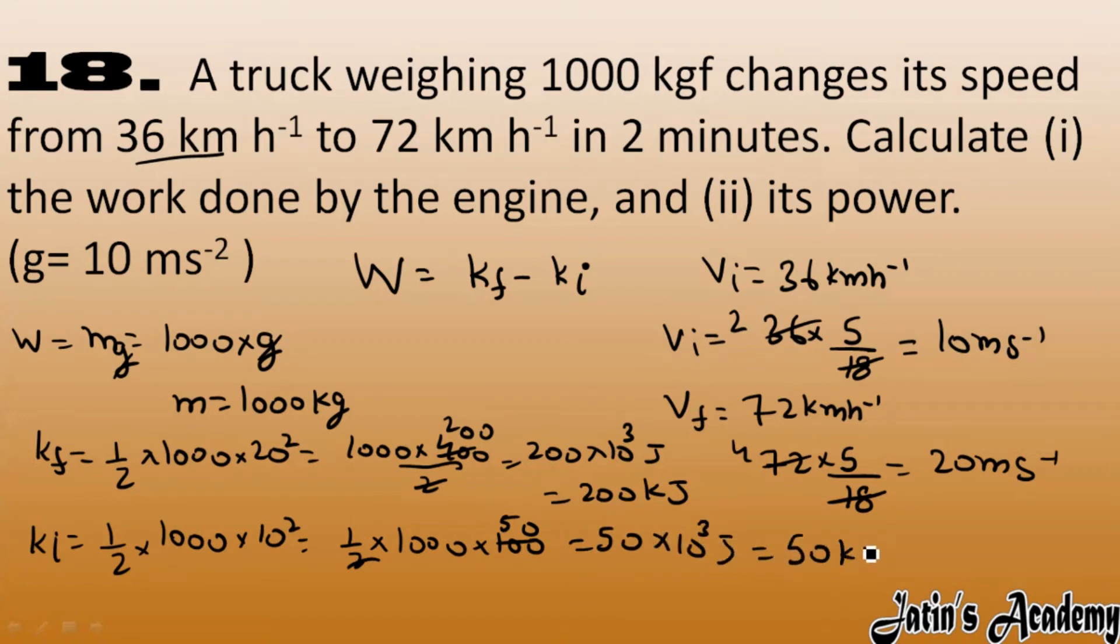Now we have to calculate the work done, which is final kinetic energy we got it as 200 kJ, initial kinetic energy we have 50 kJ. So work done we got it as 150 kJ. So at the end work done we got it as 150 kJ.